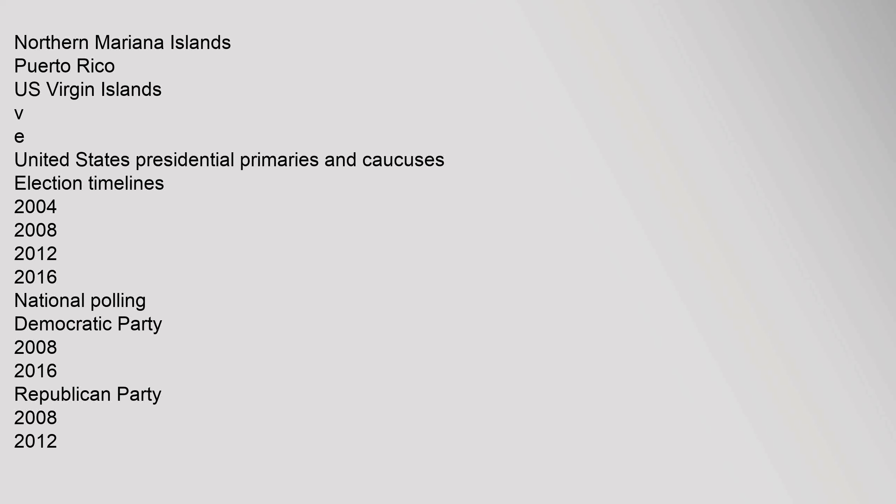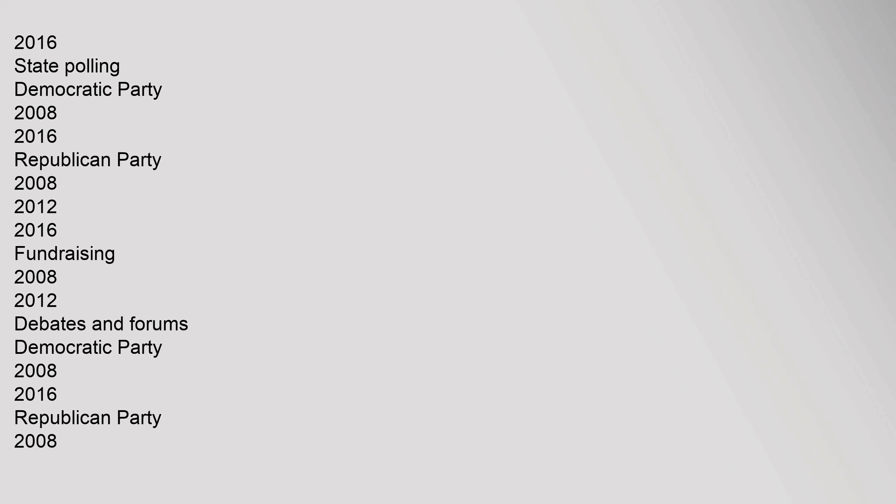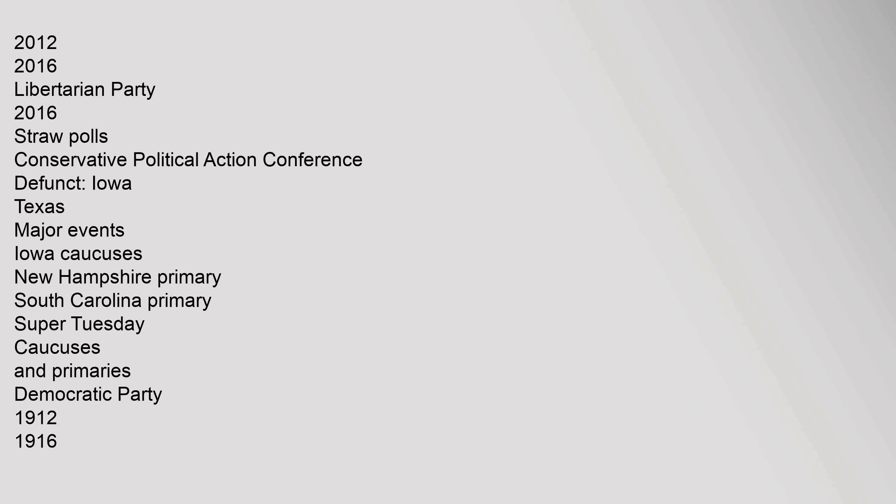United States Presidential Primaries and Caucuses — election timelines: 2004, 2008, 2012, 2016. National polling: Democratic Party 2008 and 2016, Republican Party 2008 and 2016. State polling: Democratic Party 2008 and 2016, Republican Party 2008, 2012, and 2016. Fundraising: 2008 and 2012. Debates and forums: Democratic Party 2008 and 2016, Republican Party 2008, 2012, and 2016. Libertarian Party 2016. Straw polls including Conservative Political Action Conference. Major events: Iowa Caucuses, New Hampshire Primary, South Carolina Primary, Super Tuesday.